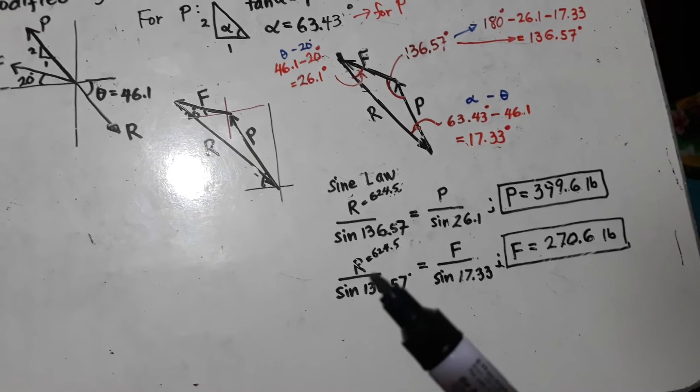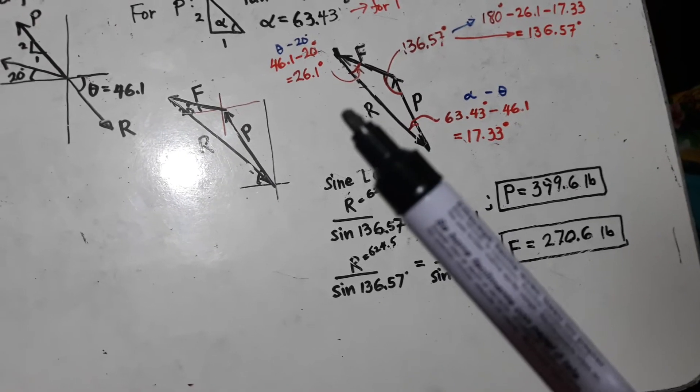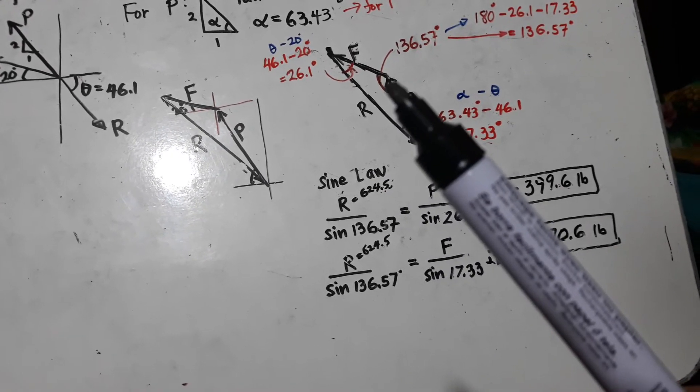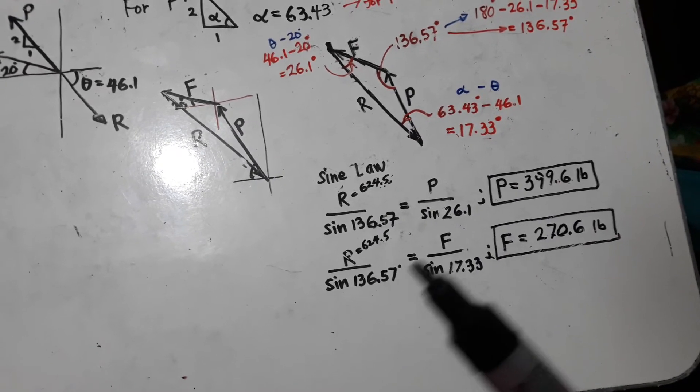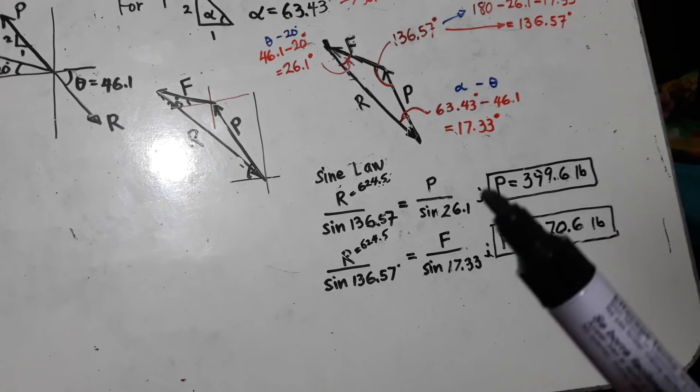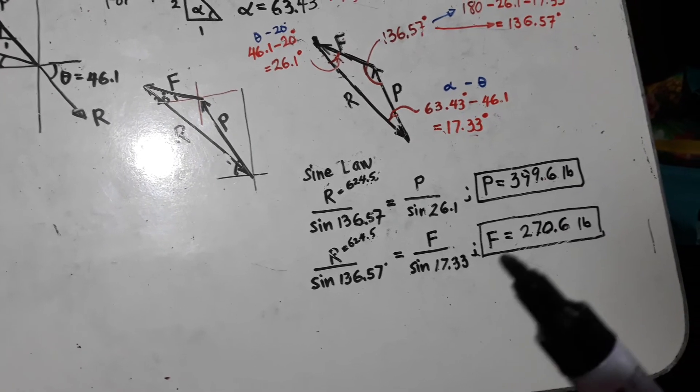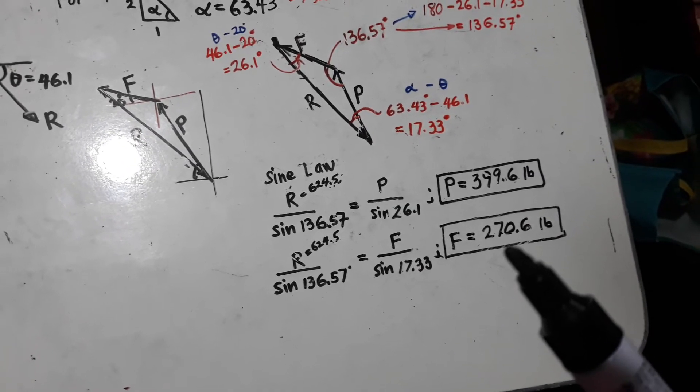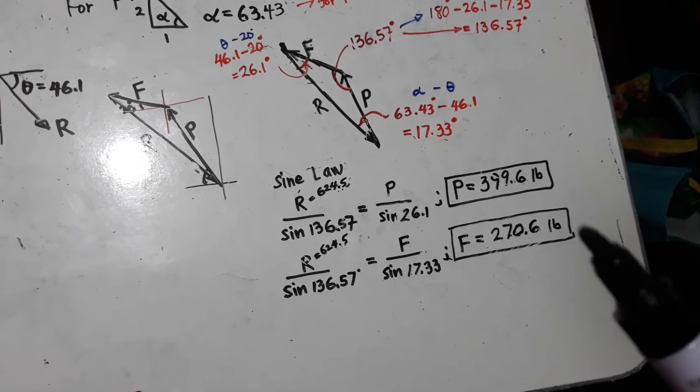The same ratio will be used for R divided by the sine of 136.57 is equal to F divided by the sine of 17.33. So, solving the value of F is 270.6 pounds.